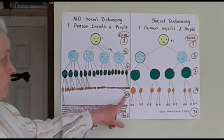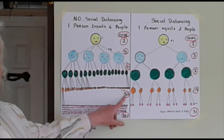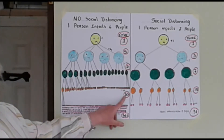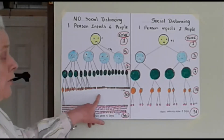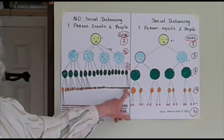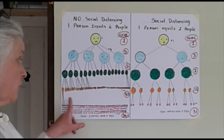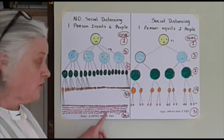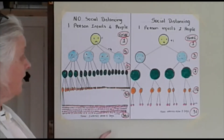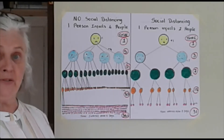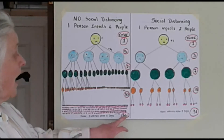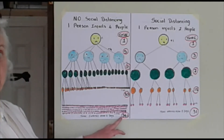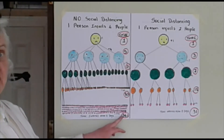Not too bad — but the problem comes on day five. Those 64 people spread it to four people each and now we have another 256 people. After five days we have a running total of 341.